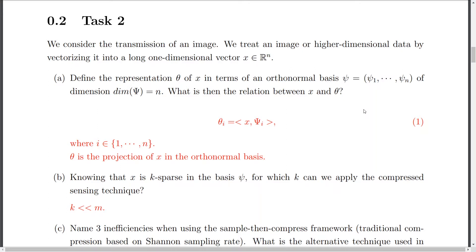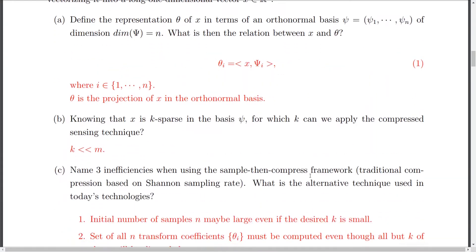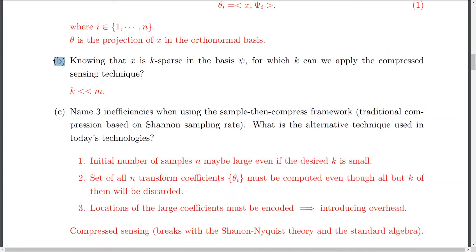Here we are like in a perfect situation. We have an orthonormal basis. So simply we need to do a certain projection. And projection means we need to calculate the dot product between X and the rows of the orthonormal basis psi. And that's how we obtain theta 1, theta 2 until theta n. And theta is the projection of X in this orthonormal basis. So knowing that X is K sparse in the basis psi, for which K actually we can apply the compressed sensing technique. Please remember that K has to be smaller than M and smaller than N. So like the smallest parameter here we have in a compressed sensing problem is actually K.